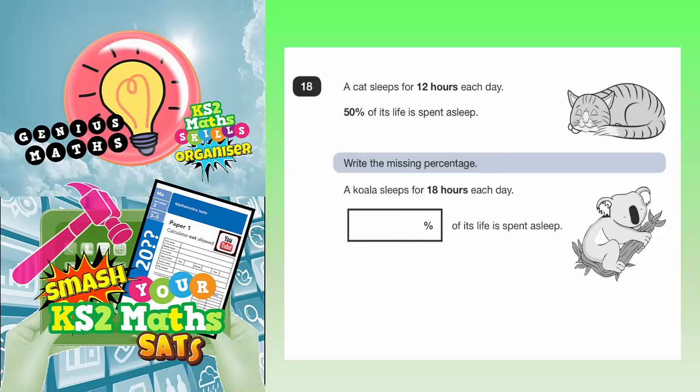Question 18. A cat sleeps for 12 hours each day. 50% of its life is spent asleep.